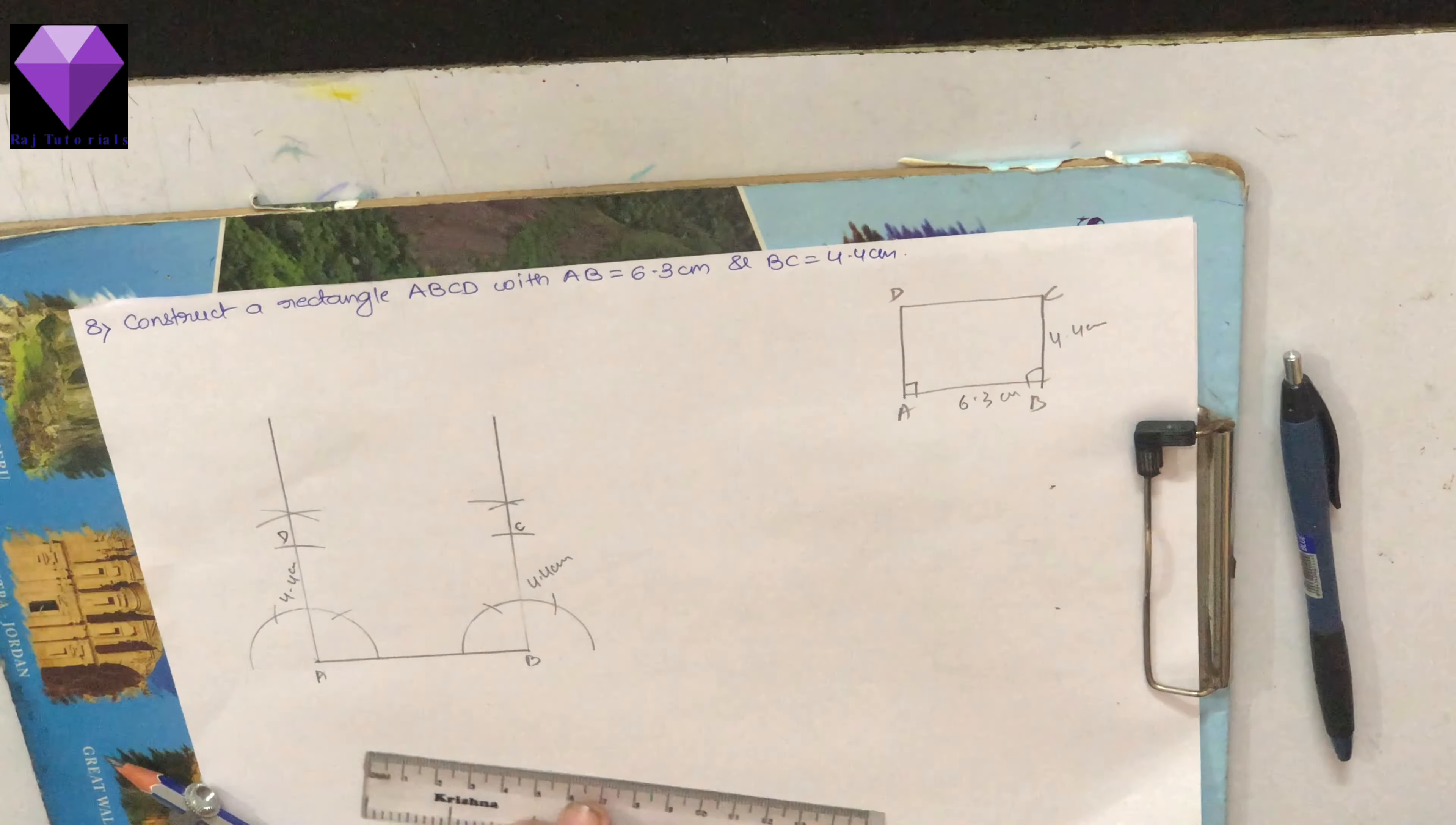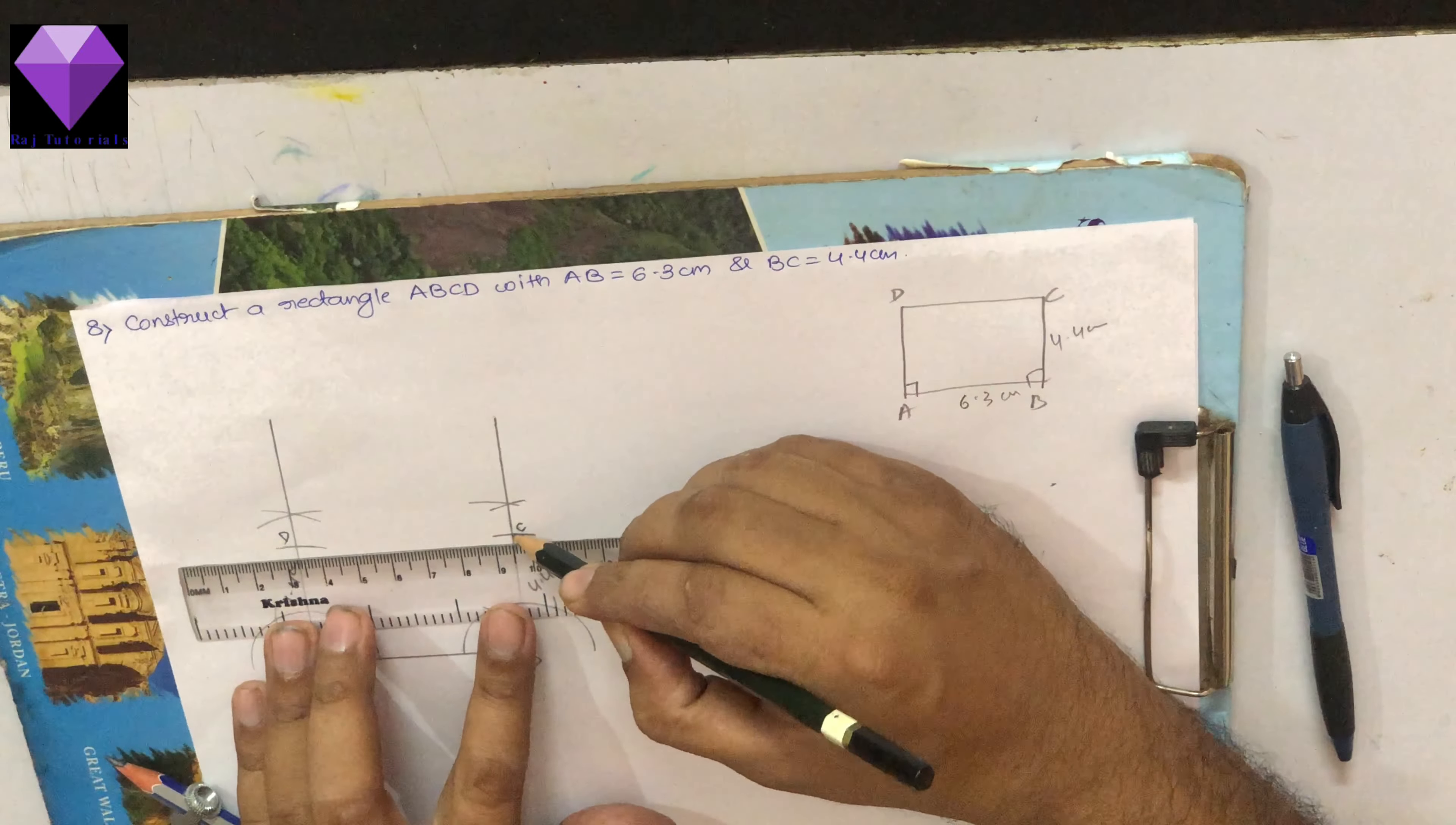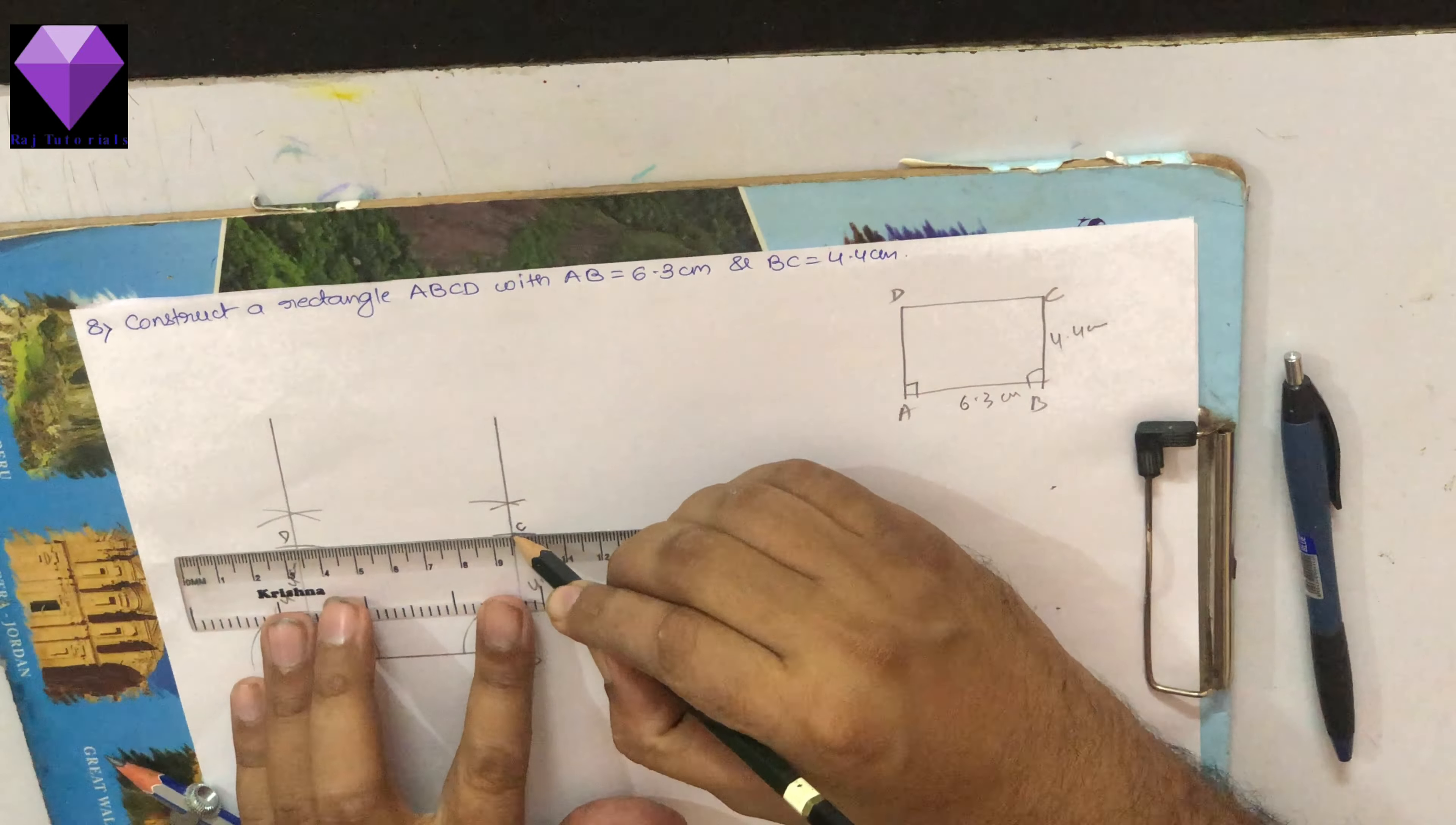I will mark them as A, B, C, D and then I will join C, D to get my rectangle A, B, C, D. Thank you.